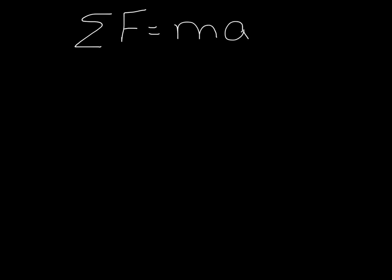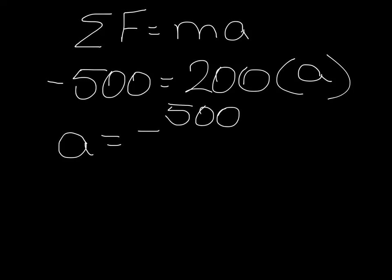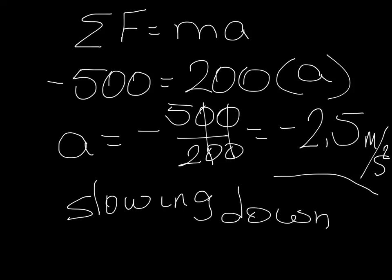Now we know the sum of the forces equals mass times acceleration. Just how fast is that car accelerating? We know negative 500 equals 200 times A, so A equals negative 500 over 200, which gives us negative 2.5 meters per second squared. Our acceleration is negative 2.5 m/s², meaning the car is slowing down — its velocity is decreasing by 2.5 meters per second every second.